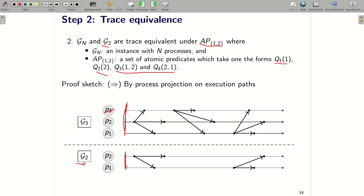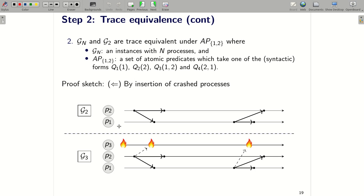And another direction. So now assume that we have an execution path in G2. And we need to construct a new path in G3 such that this path and this path are trace equivalent. The idea is that we add a process P3. And we assume that P3 crashes in the beginning. And again because our system is fully symmetric, and the failure detector modules in every process are separated. So the new path here is legal in G3.